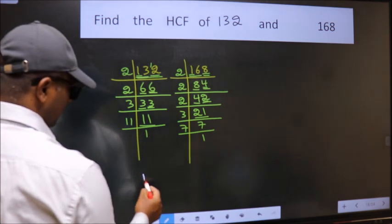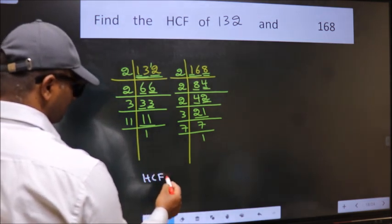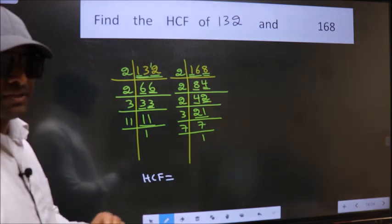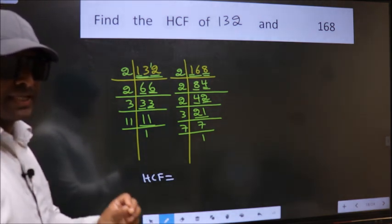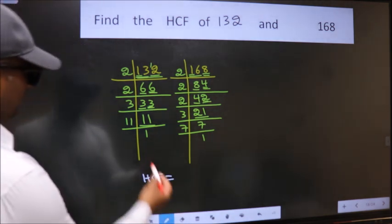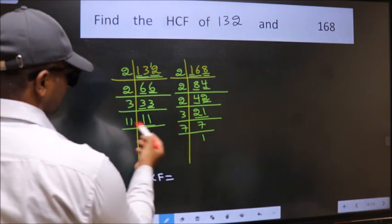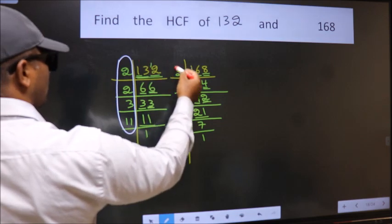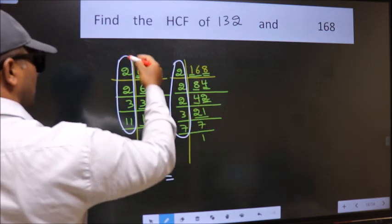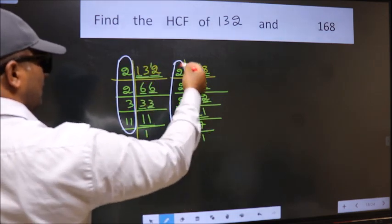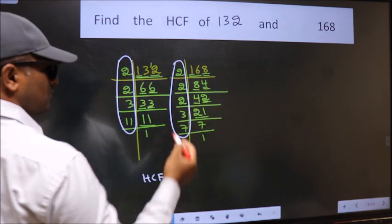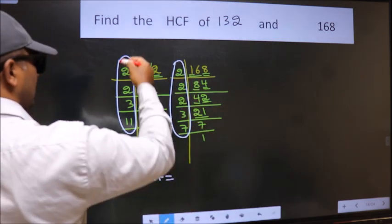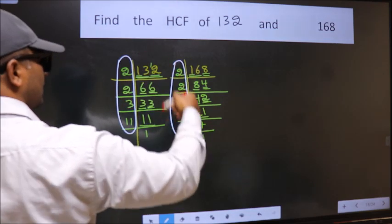Therefore, our HCF is... HCF is the product of the numbers which should be present in these two places. That is here and also here. Here and here. So now let us find the numbers which should be present here and here.